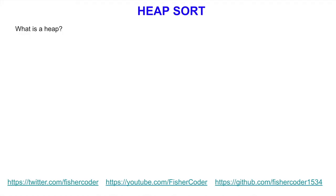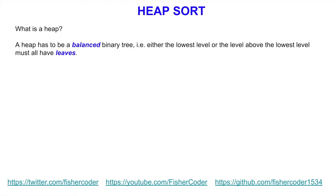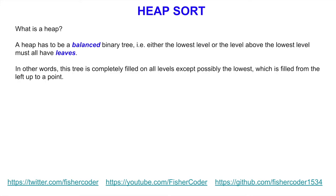First let's talk about what is a heap — this is a data structure. A heap has to be a balanced binary tree. What that means is either the lowest level or the level above the lowest level must all have leaves. A leaf is at the bottom layer and doesn't have any children. In other words, the tree is completely filled on all levels except possibly the lowest, which is filled from the left up to a certain point. In the most simple terms, it's a nearly complete binary tree — it could also be a completely full binary tree.